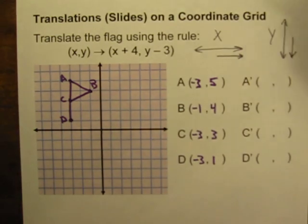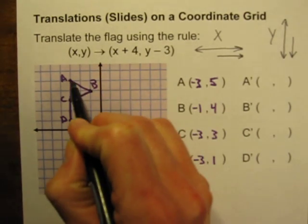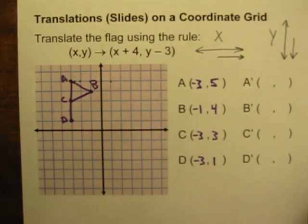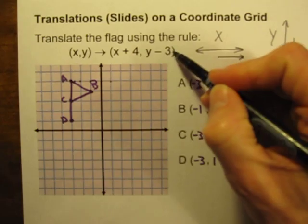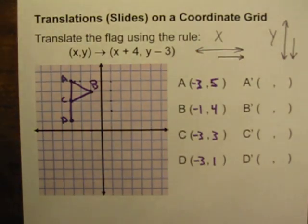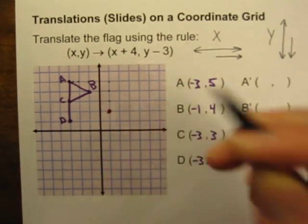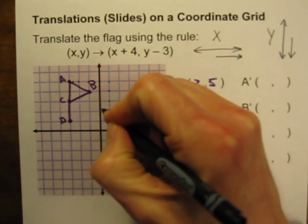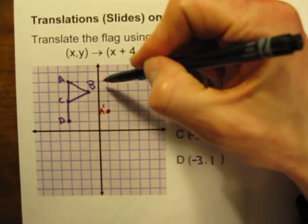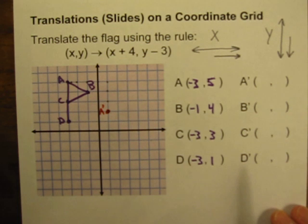So we can just start doing that. Let's start with point A and go over 4 units to the right: 1, 2, 3, 4 units to the right. And now let's go 3 units down: 1, 2, 3. Right there is going to be our new point A, or A prime. We moved 4 units to the right, 3 units down, according to our coordinate rule.